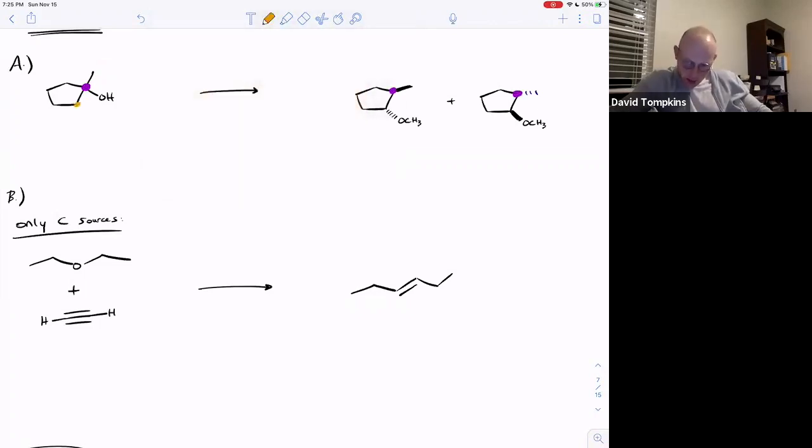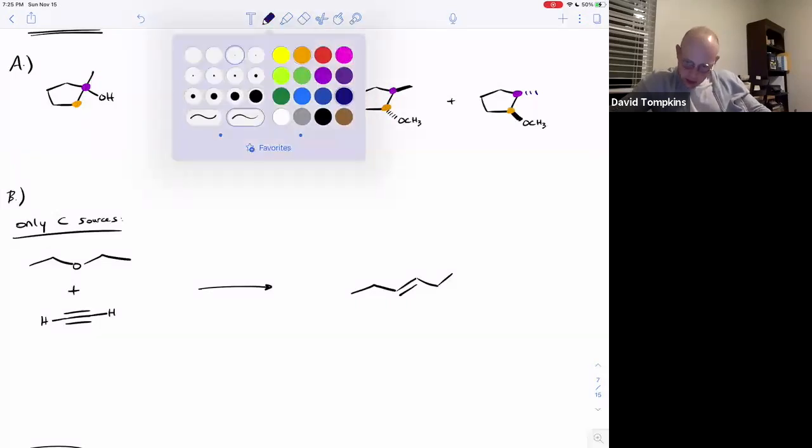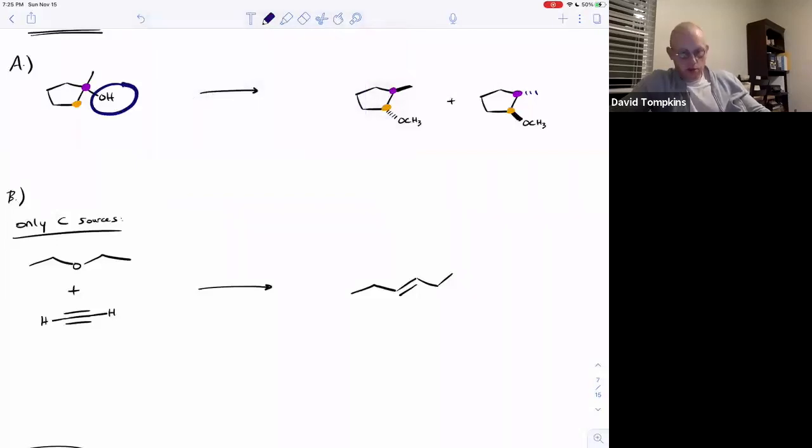The adjacent carbon has two H's on it to start, but now one of them has been replaced with this methoxy. So what I see is that the OH disappears, and a new functional group, O-methyl, appears on the adjacent carbon,